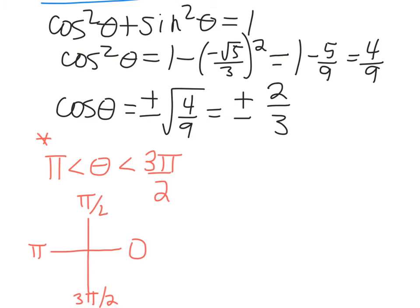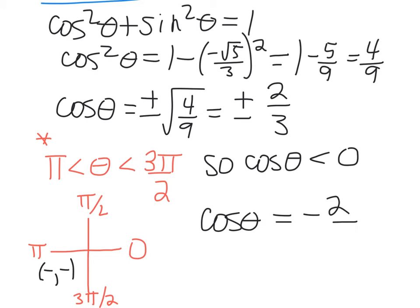But remember that in this problem, we were given that θ sits between π and 3π over 2. On our unit circle, that means that θ is in this quadrant. And in that quadrant, the x value is negative, and so is the y value. And cos is the x value on the unit circle, so I know that cos is less than 0 in that quadrant. So that tells me that cosθ must be negative 2 over 3.